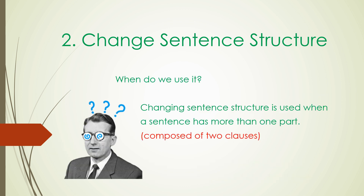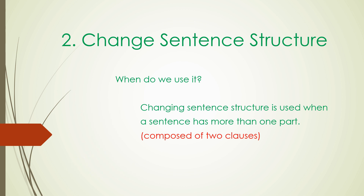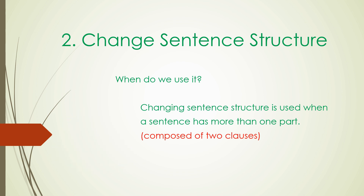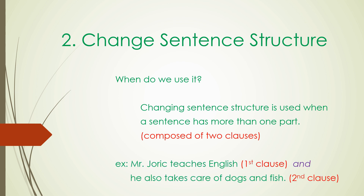So, when do I use it? Changing sentence structure is used with two-part sentences — in other words, when a sentence is not a simple one. It is best used with a compound or a complex sentence, or a sentence that is composed of two clauses. Are you ready for this example? Mr. Jarek teaches English and he takes care of dogs and fish. In this example, 'Mr. Jarek teaches English' is one clause, while 'he also takes care of dogs and fish' is another clause. The word 'and' is a conjunction or connector. Got it? Awesome!